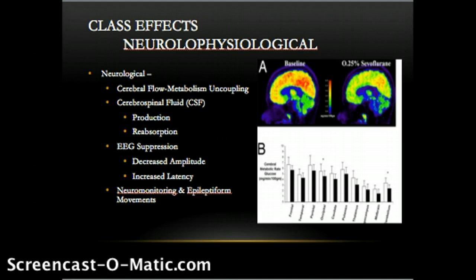Volatile anesthetics lead to changes in EEG as well. In general, there is an overall decrease in amplitude and an increase in latency of the EEG wave. According to Stoelting, during quiet wakefulness, alpha and beta activity predominate. As anesthetic concentration increases, the EEG shifts to larger amplitude and lower frequency activity.